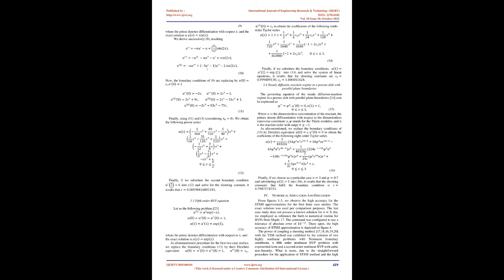In order to show the potential of the proposed procedure, nonlinear BVP problems are solved and compared versus numerical methods: two Neumann boundary condition problems, a fifth-order equation, and the governing equation of the steady diffusion-reaction regime in a porous slab with parallel plane boundaries. This paper is organized as follows: in Section 2 we introduce the basic concept of the STSM method; in Section 3 we find the approximated solutions of four BVP problems of different kinds; numerical simulations and a discussion about the results are provided in Section 4; and finally, a concluding remark is given in Section 5.